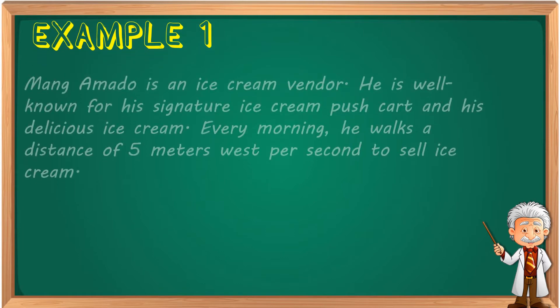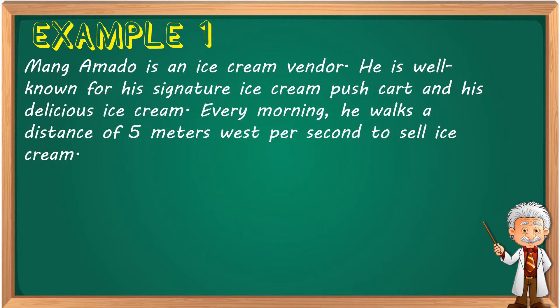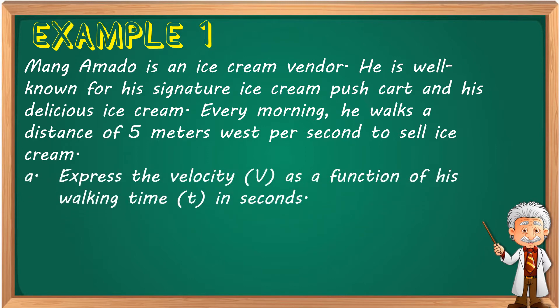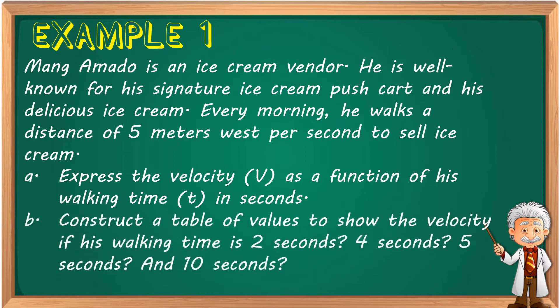Example 1. Mang Amado is an ice cream vendor. He is well-known for his signature ice cream pushcart and his delicious ice cream. Every morning, he walks a distance of 5 meters west per second to sell ice cream. So, we have to express the velocity v as a function of his walking time t in seconds. And letter b, construct a table of values to show the velocity if his walking time is 2 seconds, 4 seconds, 5 seconds, and 10 seconds.